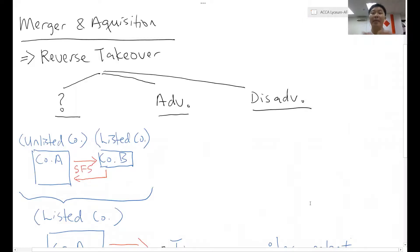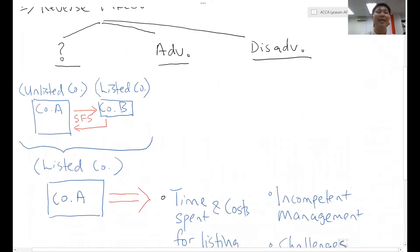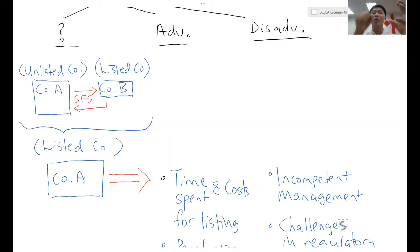A reverse takeover, as opposed to a normal takeover or acquisition, usually involves a larger company that is in a listed company position taking over a smaller company that could be unlisted for the purpose of expansion. But in the reverse takeover, as you can see on the left-hand side of the column, it involves a larger company — in this case, Company A — however, it is unlisted, attempting to take over a smaller company, Company B, which has listed company status.